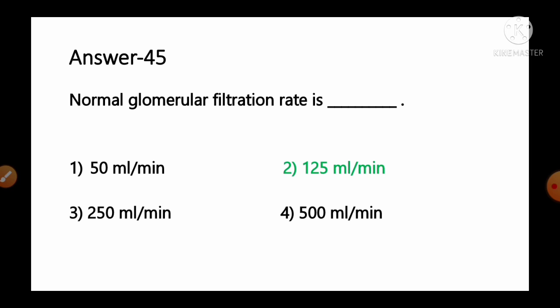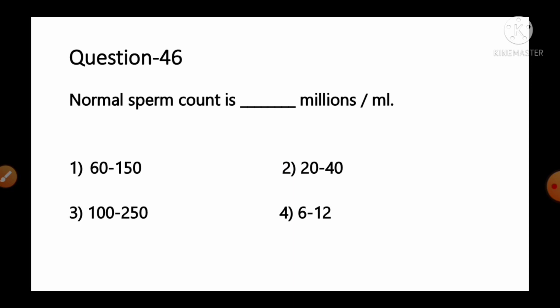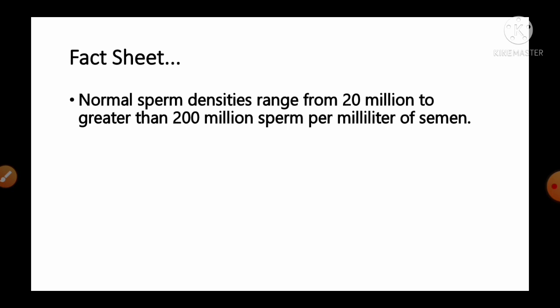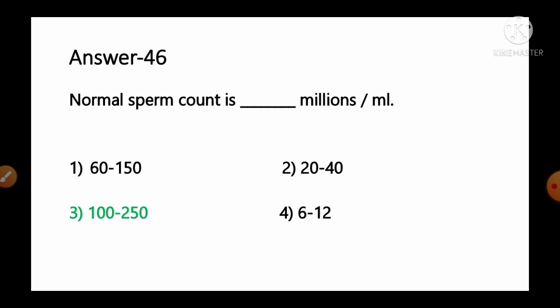Question number 46: Normal sperm count is — millions per ml. Options: 1) 60–150, 2) 20–40, 3) 100–250, 4) 6–12. Normal sperm density ranges from 20 million to greater than 200 million sperm per milliliter of semen. So option number 3, 100–250 million per ml, is the correct answer.